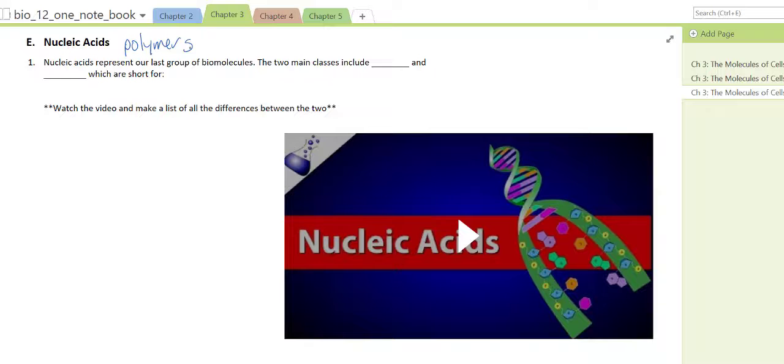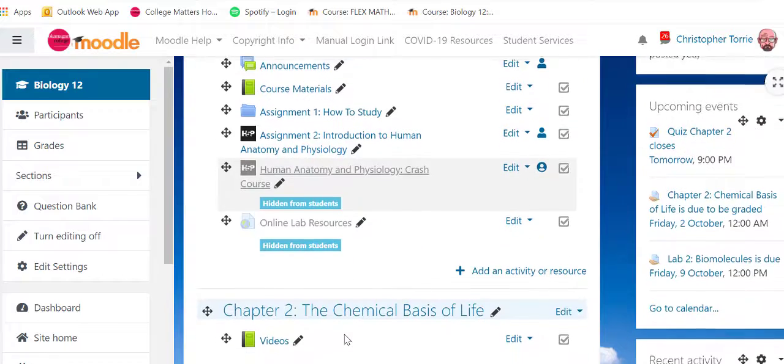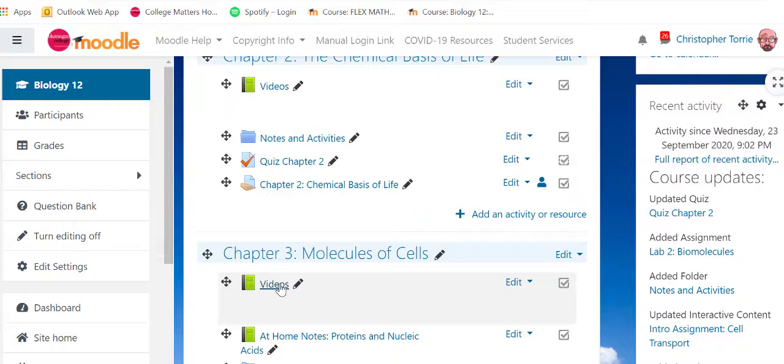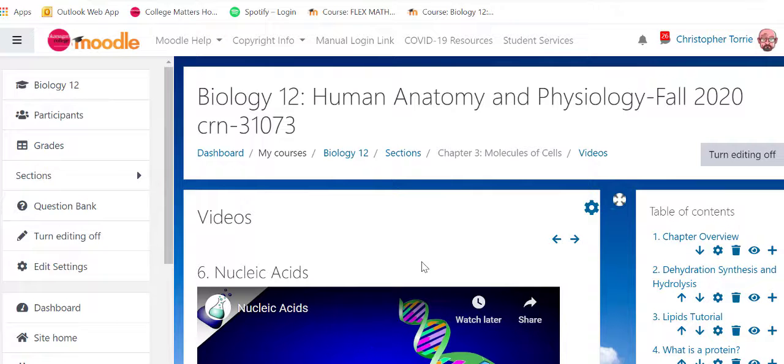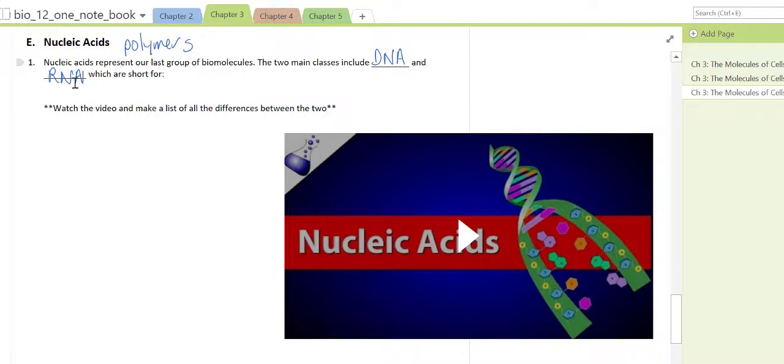Nucleic acids represent the last group of biomolecules and include the following two classes: DNA and RNA, which I'll let you watch the video here below to sort out what that means. I want you to figure that out, what do DNA and RNA stand for. If you go to the Moodle and to the chapter 3 videos, scroll down to page 6, nucleic acids, and you'll see that video there. So pause this video, have a watch. What you're going to do is I'd like you to try and come up with all the differences between DNA and RNA and write those differences here.